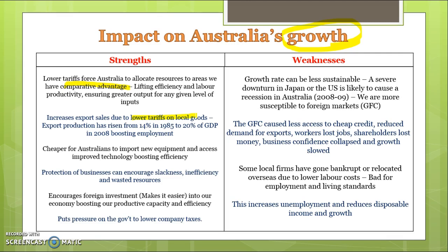Summarising the benefits for growth: first, we've become specialised in areas of comparative advantage, which boosts efficiency. Second, lower tariffs on our goods give us access to overseas markets, so we sell a lot more beef, minerals, and services where we have comparative advantage. Third, it gives us access to cheaper equipment from overseas, which has been used to boost efficiency within our markets.